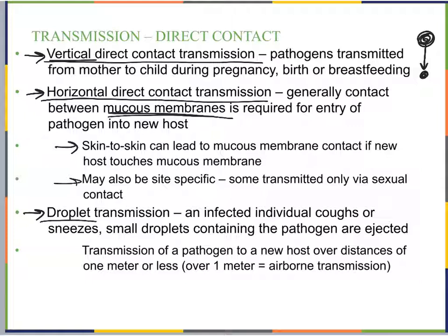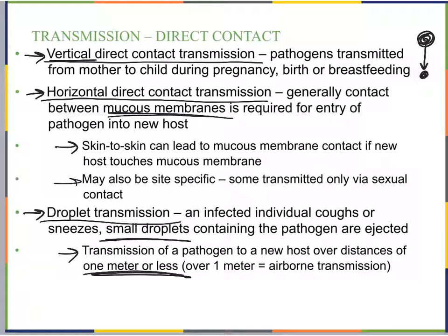Droplet transmission occurs when an infected individual coughs or sneezes, ejecting small droplets containing the pathogen onto a new host at distances of one meter or less. If the person is sitting next to you and coughs or sneezes, the droplets literally fall on you because you're so close. If the distance is greater than one meter, it's considered airborne transmission — we'll discuss that in a moment.